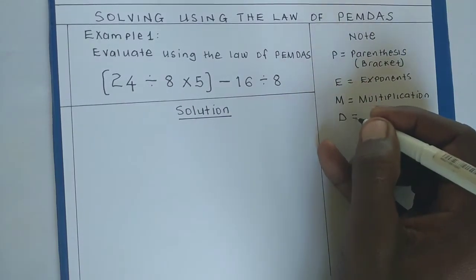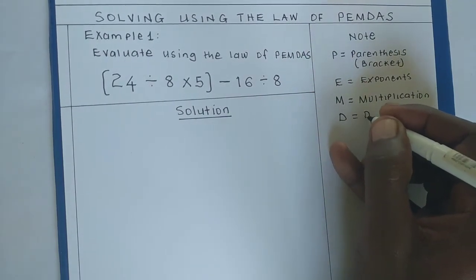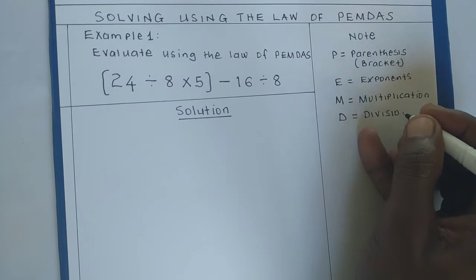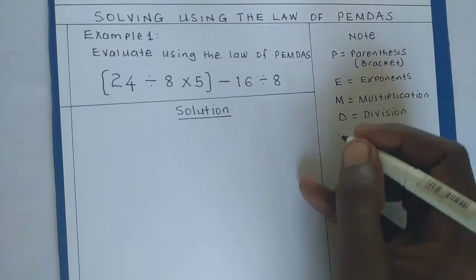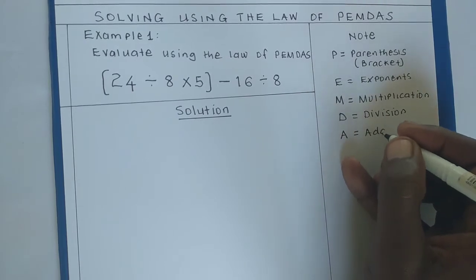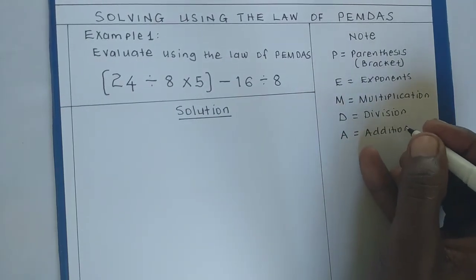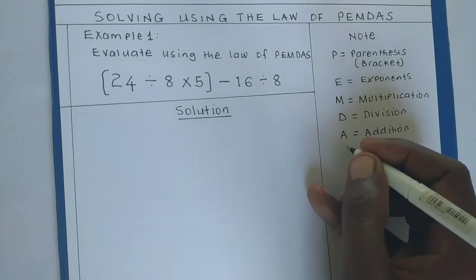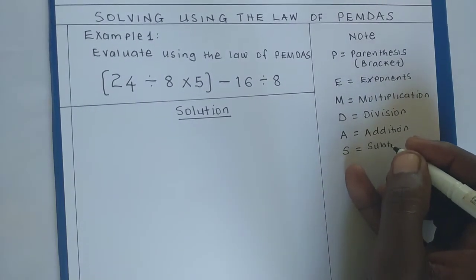D for division, A is for addition, and finally S is for subtraction.